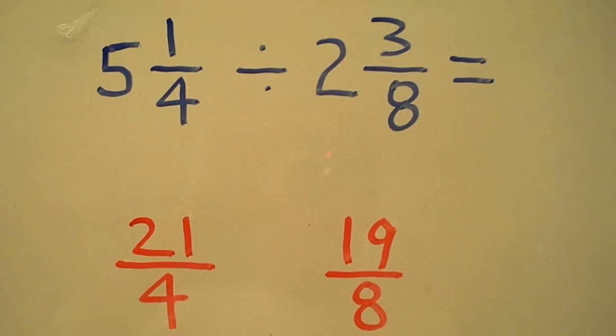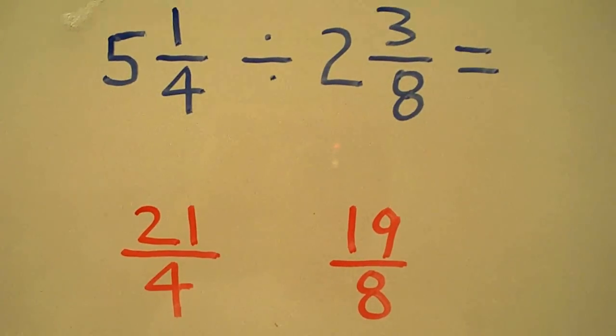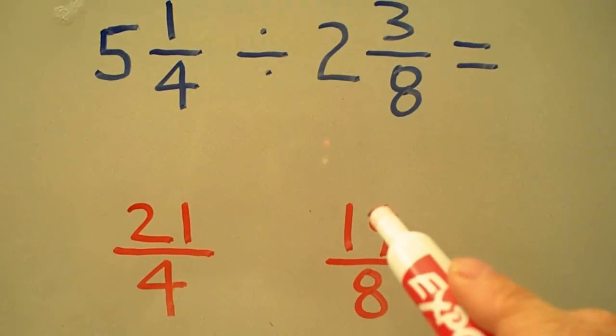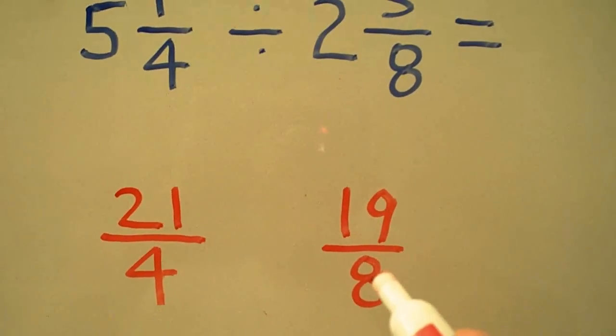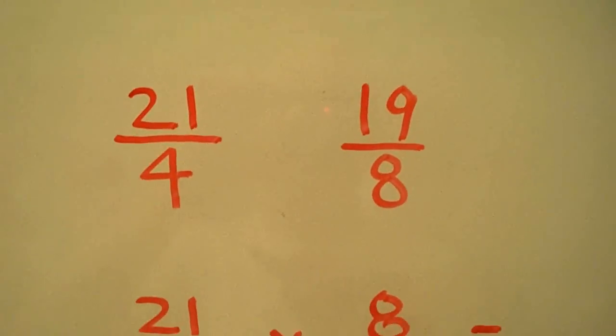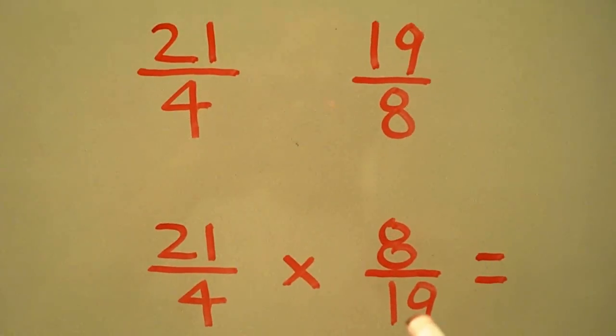Now remember, there are no real division in fractions. So what we have to do is flip the second fraction and then multiply across. So 19/8 will become 8/19. So now we have 21/4 times 8/19.